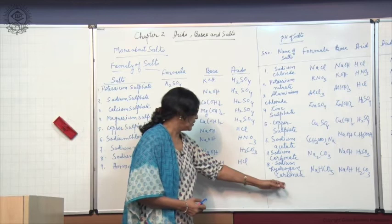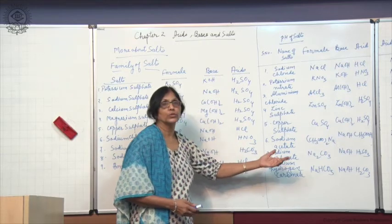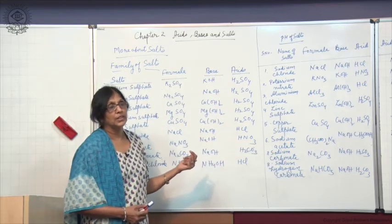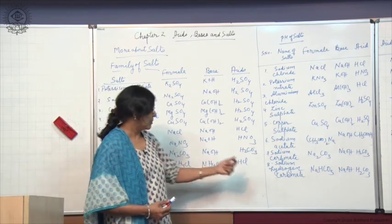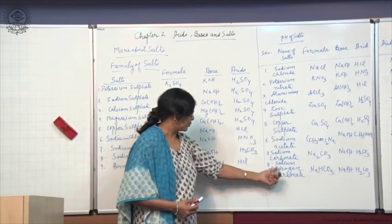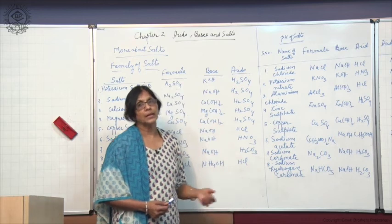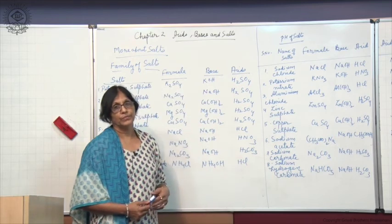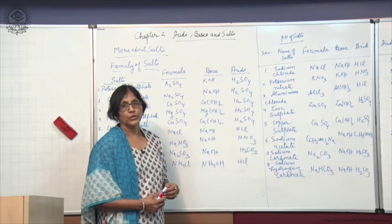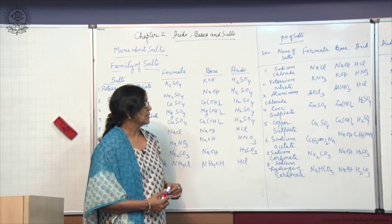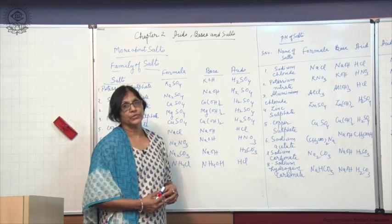We can also include calcium bicarbonate, Ca(HCO₃)₂, and sodium hydrogen carbonate, both of which are called bicarbonates. Like this, salts form families and can be called by various names based on the common ion present.